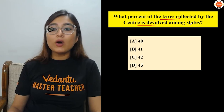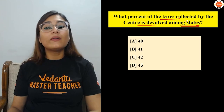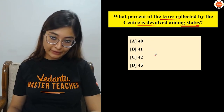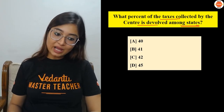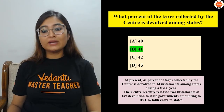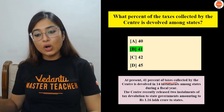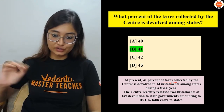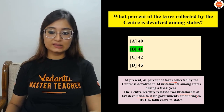Next question: What percent of taxes collected by the Centre is devolved among the states? Options: 40, 41, 42, or 45 percent. The correct answer is 41%. This tax devolution is released in 14 installments during a fiscal year. The Centre recently released 2 installments of tax devolution to state governments amounting to 1.16 lakh crores.